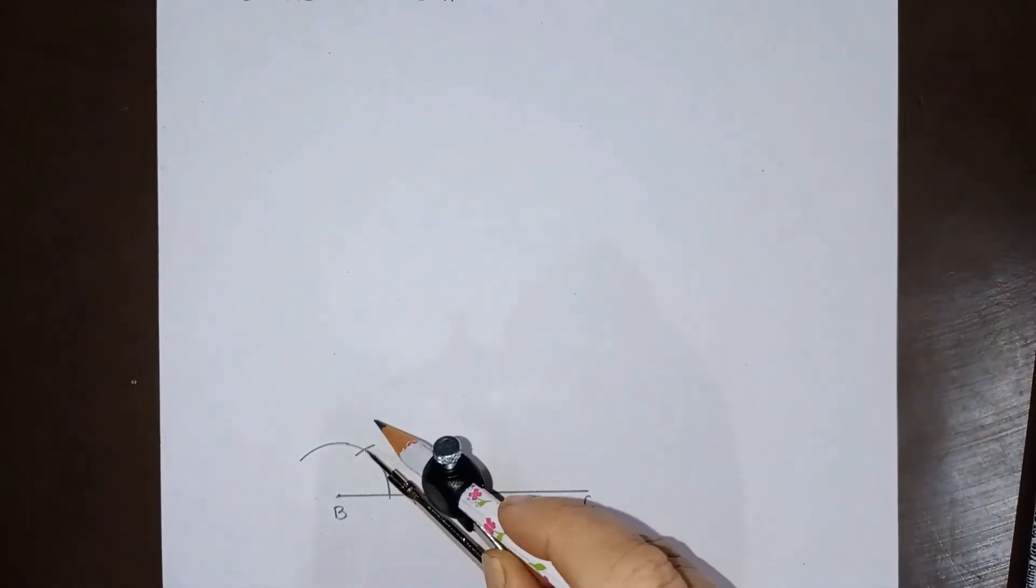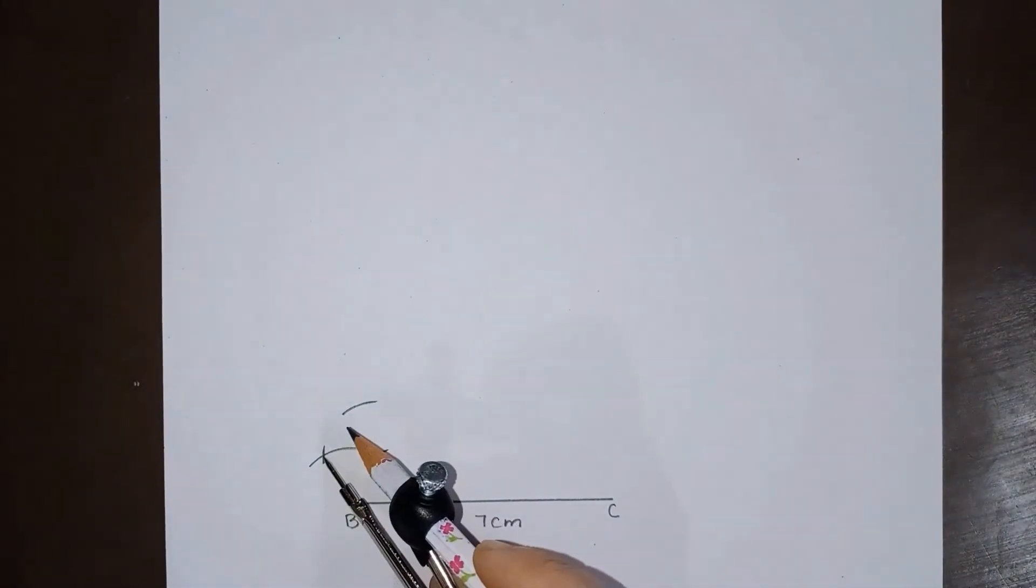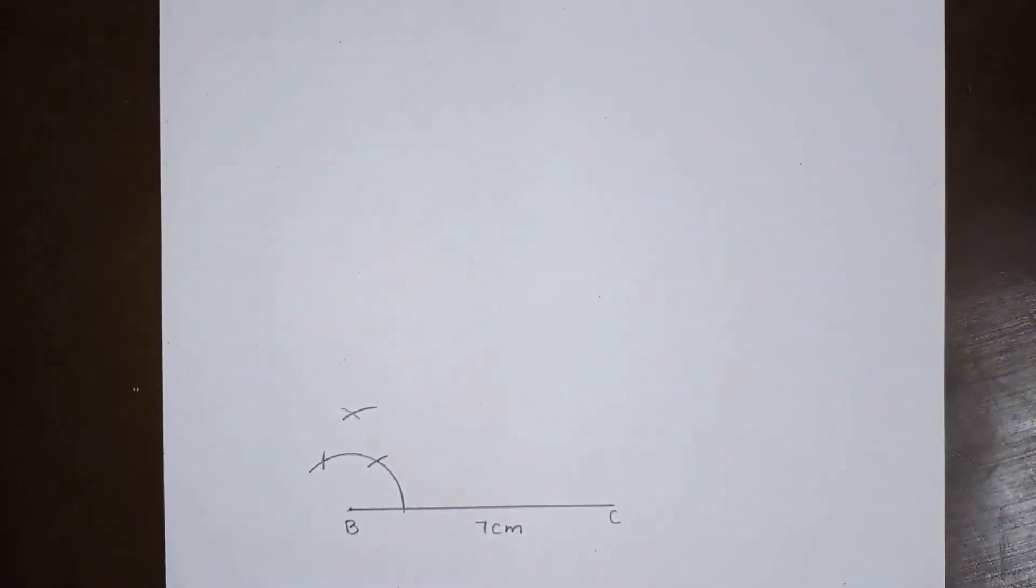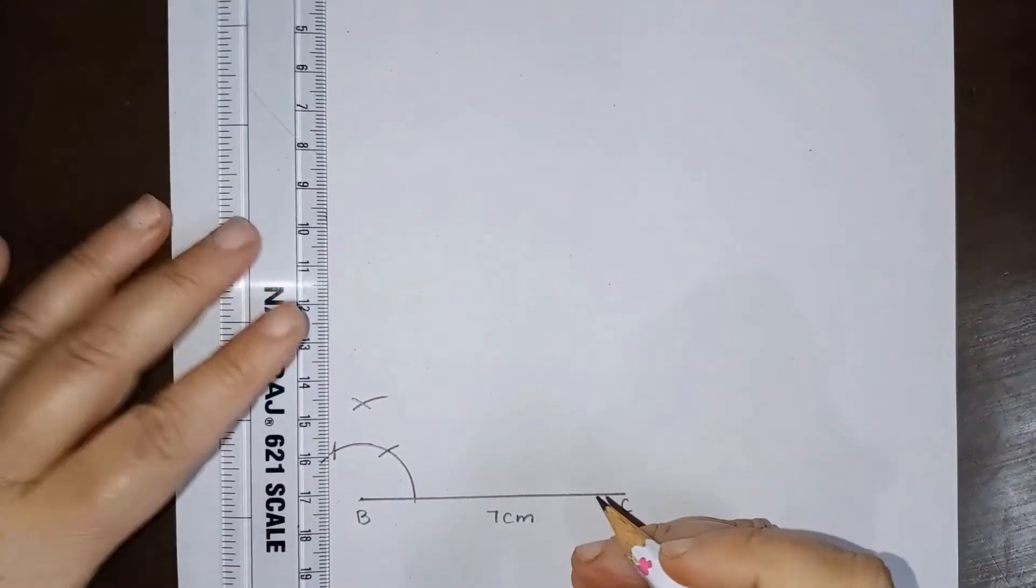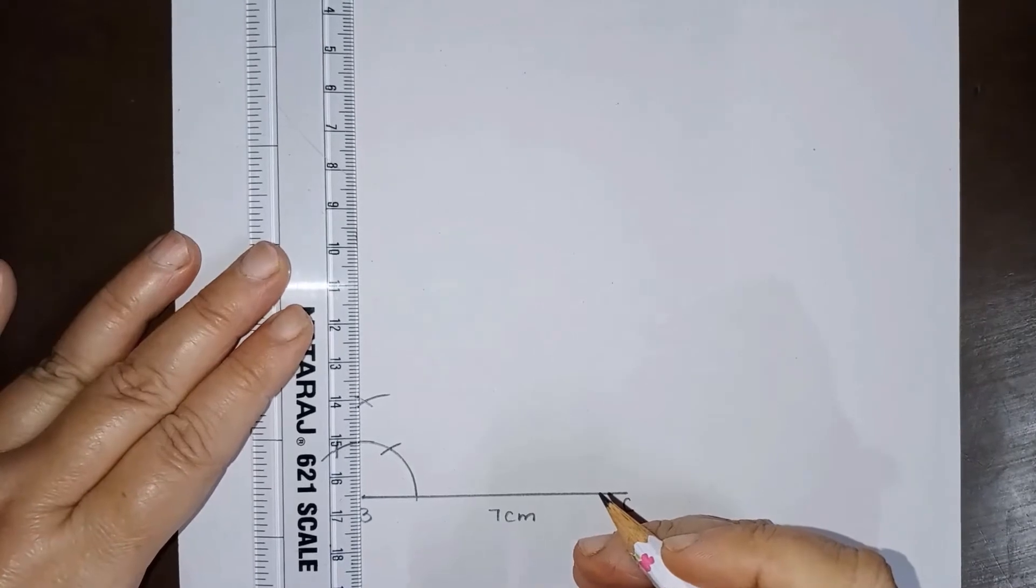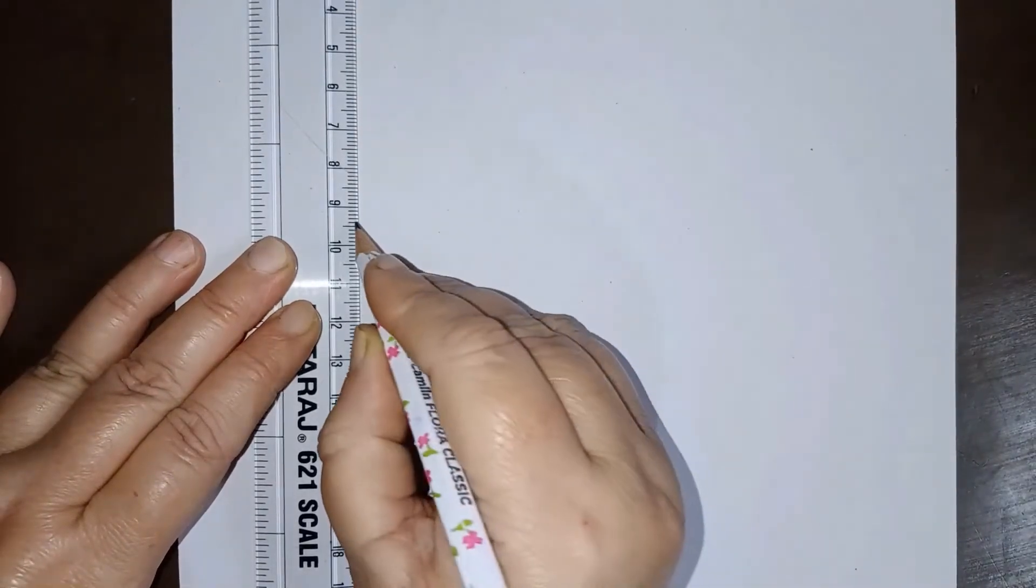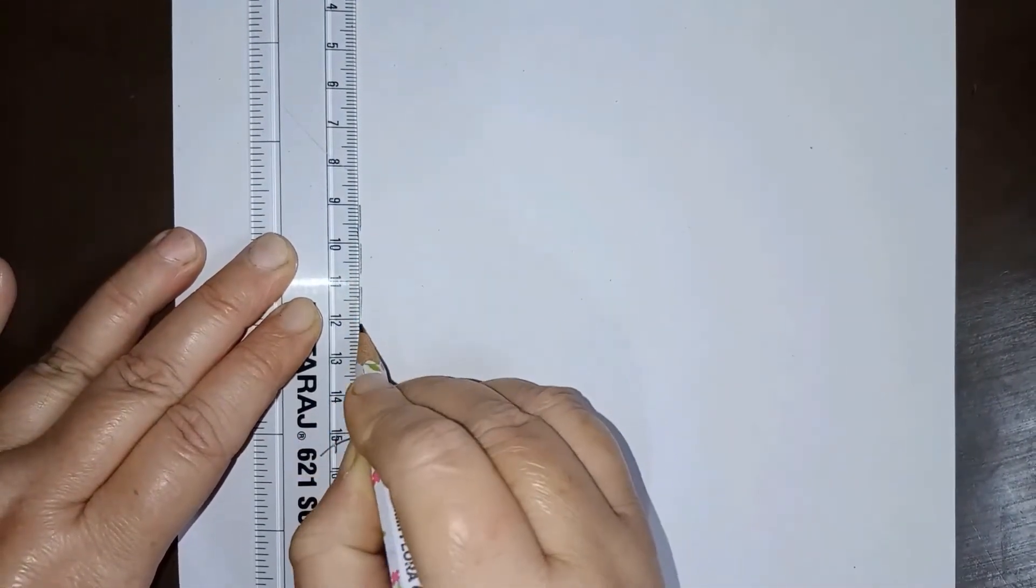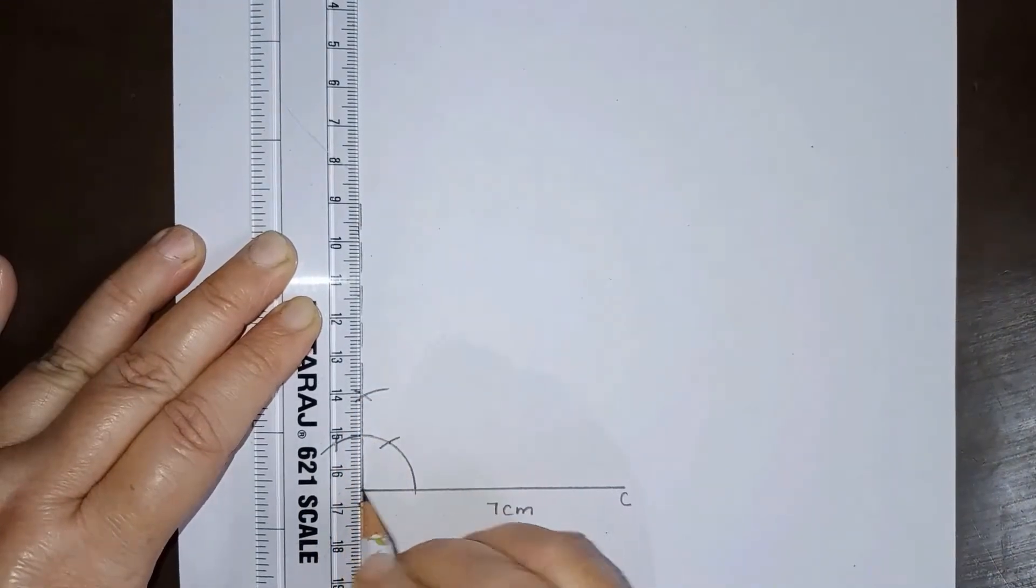So from here, this is the arc of 60 degrees and this is 120 degrees, and between 60 and 120 we have 90 degrees. So let us join this. So this will be 90 degrees. So this is angle of 90 degrees like this.